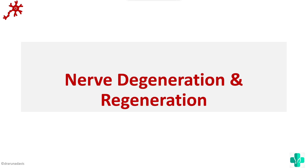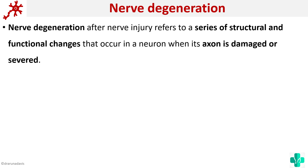In this video we are going to see about nerve degeneration and regeneration. This question, especially the part of nerve degeneration, has been asked multiple times in many university questions. Once there is a nerve injury, a series of structural and functional changes occur, and those changes are called nerve degeneration. After some time the nerve might recover, and whether it will recover completely depends on the grade of nerve injury.